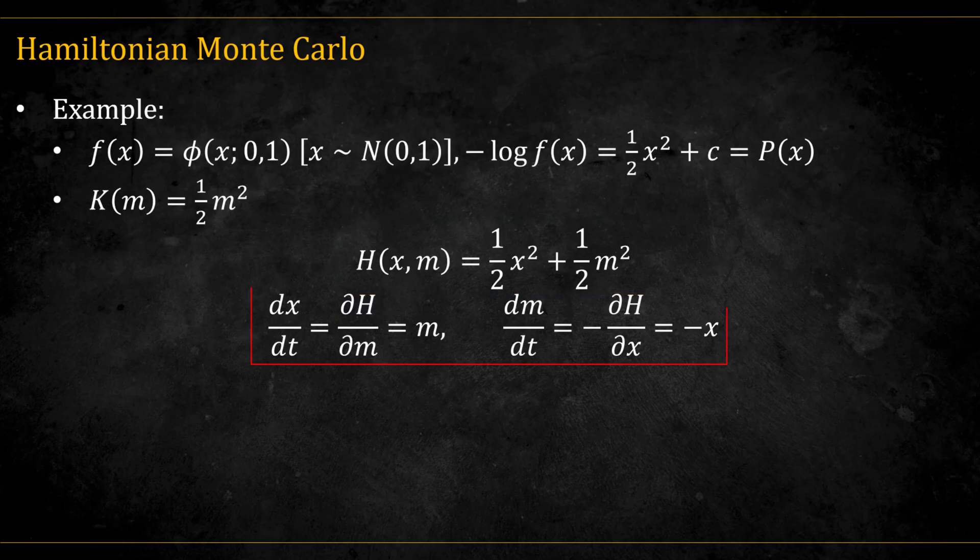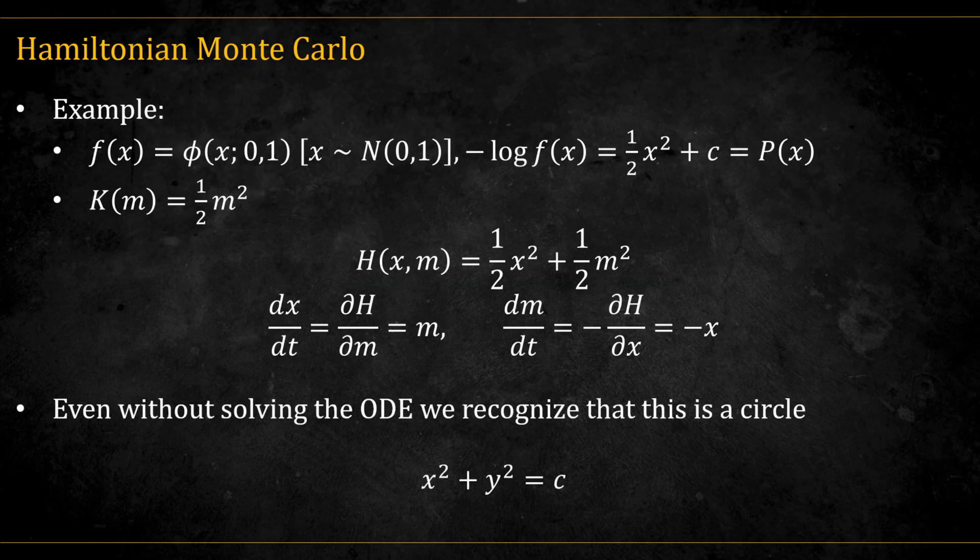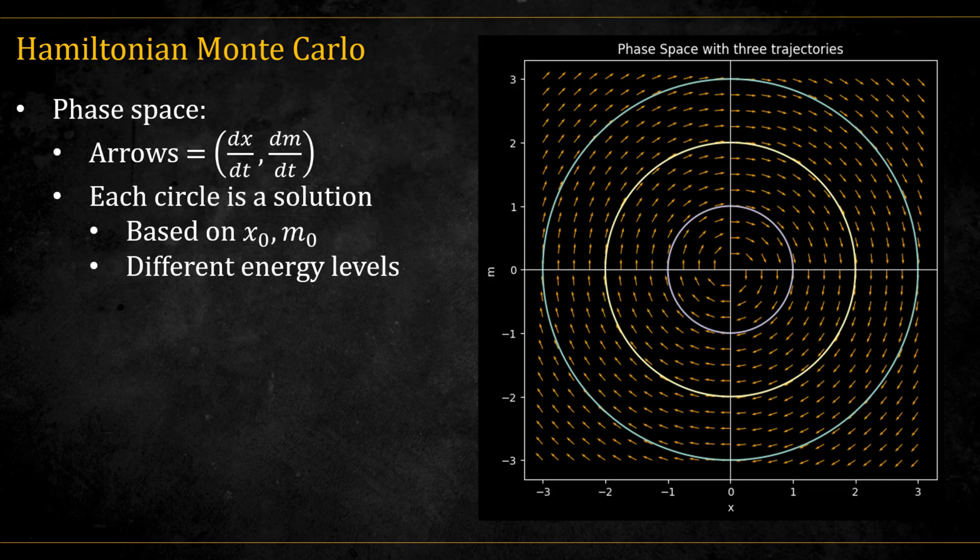And we see that if we apply the Hamiltonian equations, we get that dx/dt is equal to m, and dm/dt is equal to negative x. Even without solving these equations, we can see that the Hamiltonian defines a circle in the xm plane. This means the dynamics trace out circular motion in the joint space of position and momentum, also known as phase space. Here's what this phase space looks like. The small arrows represent the vector field at each point, that is the direction given by dx/dt and dm/dt. Each one of the three circles are separate solutions based on different initial conditions, hence different energy levels. Bigger circles correspond to higher energy.